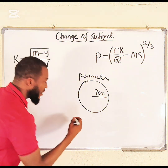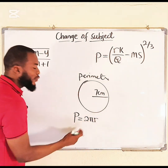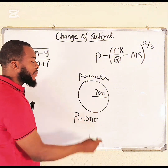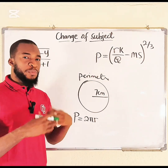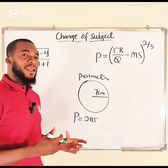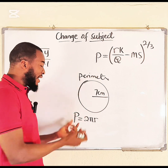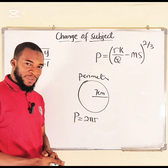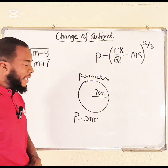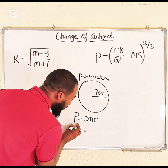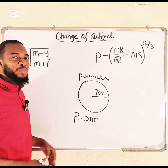The perimeter, denoted by P, is equal to 2πr — 2 multiplied by pi, which is a constant, multiplied by the radius. In this case, we are talking about perimeter, and hence perimeter is the subject of our discussion. It is said to be the subject of the formula. That variable which always stands alone is said to be the subject of the formula.